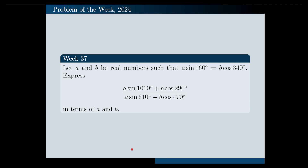Hello. In this video I'm going to solve the following problem. Let A and B be real numbers such that A times sine of 160 degrees equals B times cosine of 340 degrees. Express this fraction — A times sine of 1010 degrees plus B times cosine of 290 degrees, all over A times sine of 610 degrees plus B times cosine of 470 degrees — in terms of A and B.